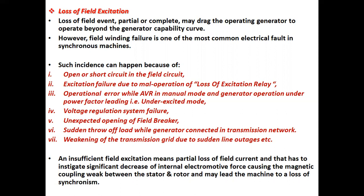Number three, operational error while AVR is in manual mode and generator operation under power factor leading, that is under excited mode. Number four, voltage regulation system failure. Number five, unexpected opening of field breaker. Number six, sudden throw of load while generator is connected in transmission network. Number seven, weakening of the transmission grid due to sudden line outages, etc.